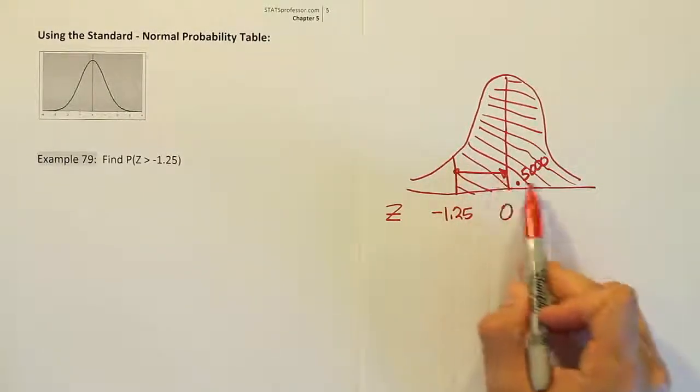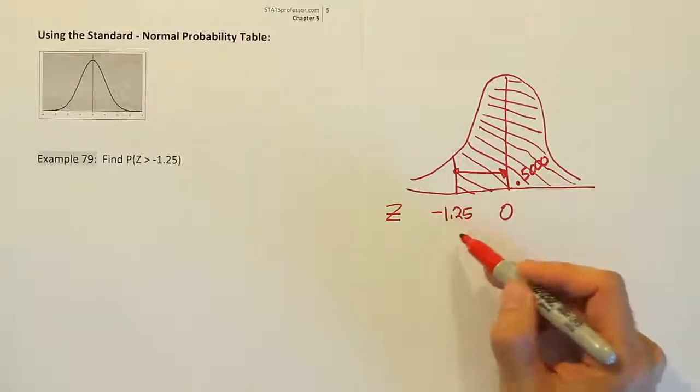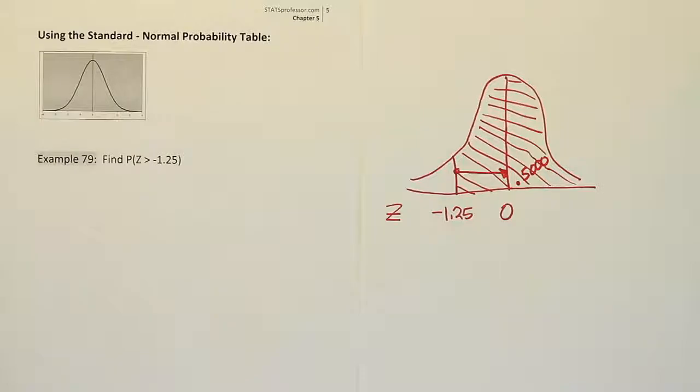So we're going to add the number we get from the chart to the other half of the curve and that will give us our total area. Let's go to the chart and look up 1.25 and see what the table gives us.